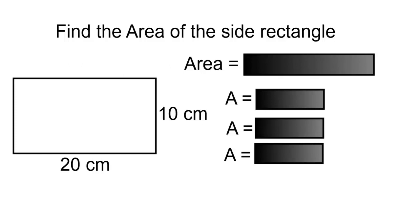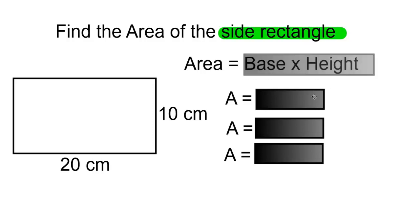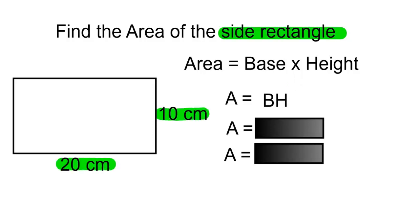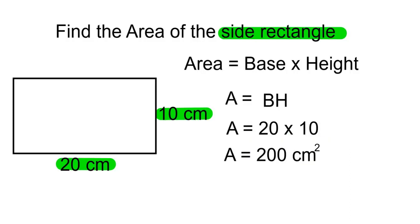We now have to find the area of the side rectangle. Area is equal to base times height, written as A equals BH. The base is going to be 20 centimeters and the height is going to be 10 centimeters. 20 times 10 gives us 200 centimeters squared.